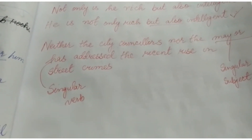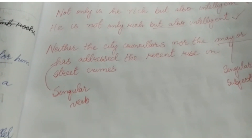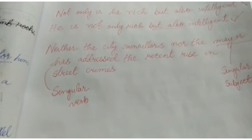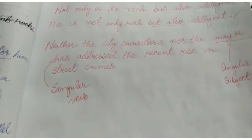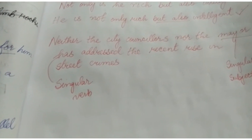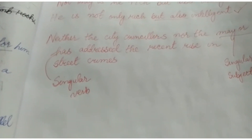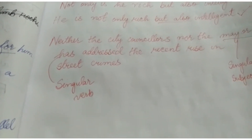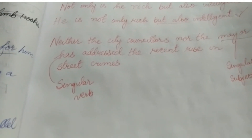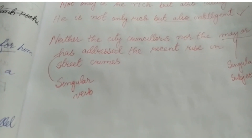In the example 'Neither the city councilors nor the mayor has addressed the recent rise in street crimes,' the verb 'has' is a singular verb. Why? Because the verb is preceded by the singular subject 'mayor.' When there are two kinds of subjects — one singular and one plural — the verb will agree with the subject which is closest to it.